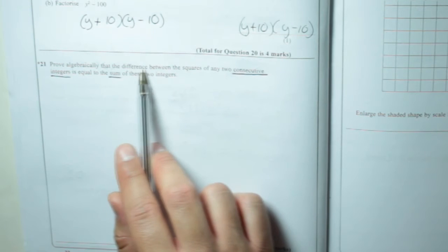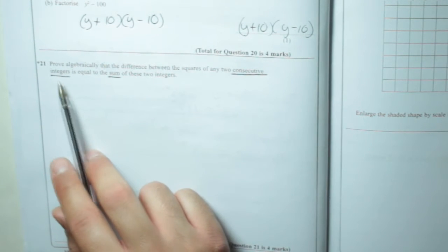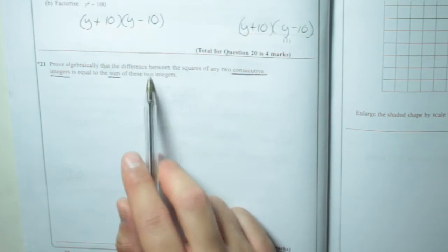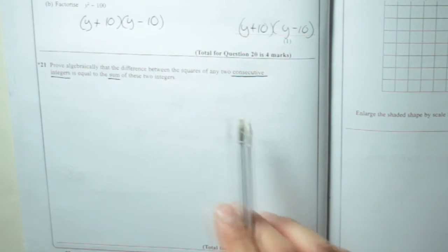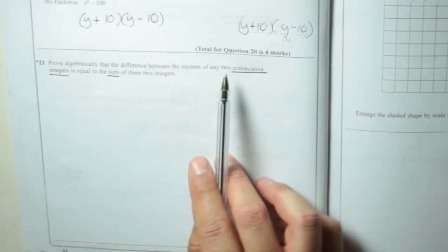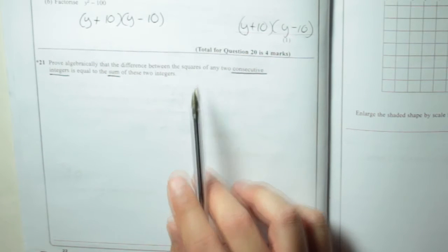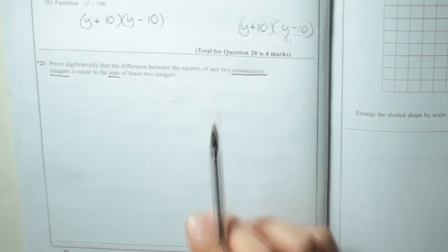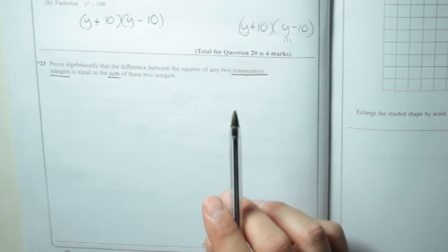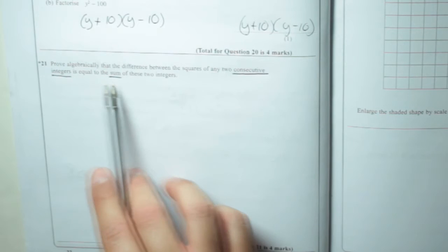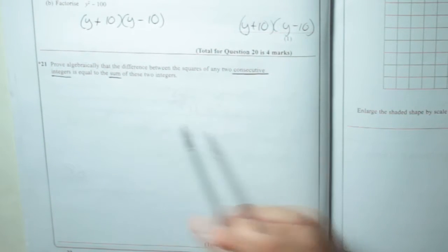Prove algebraically that the difference between the squares of any two consecutive integers is equal to the sum of these two integers. Because it says prove algebraically, you can't just take any two numbers and test it. You could try it — for example, if you take 2 and 3, the difference between the squares: 2 squared is 4, 3 squared is 9, the difference is 9 take away 4, which is 5. And the sum of these two integers: 2 plus 3 is 5. So it works.